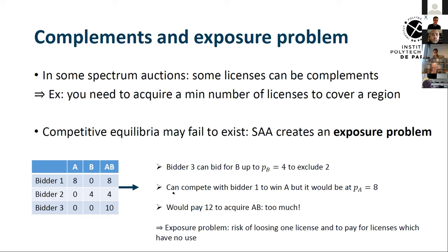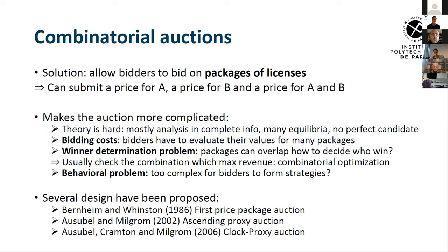When there are complementarities, this is known as the combinatorial auction problem. One solution to help bidders is to allow them to submit package bids — bids on bundles of licenses rather than only on individual licenses — so a bidder can submit separate prices for license A, license B, and the package A+B.